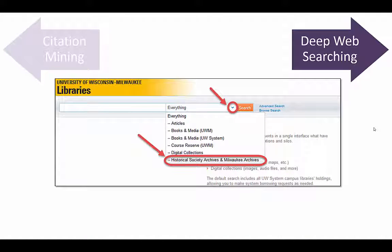You can find physical primary sources from the Wisconsin Historical Society and UWM libraries' archives and special collections through Search at UW. These resources can be used within the library.